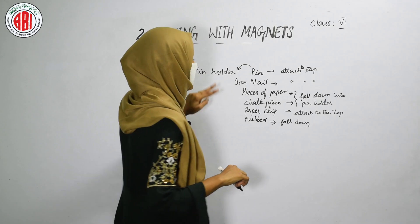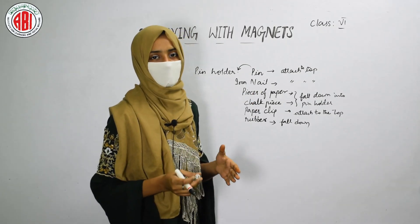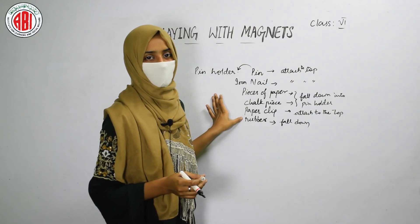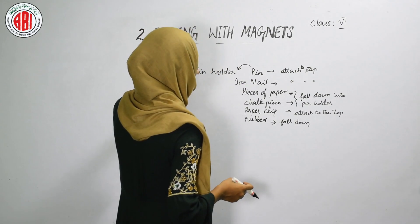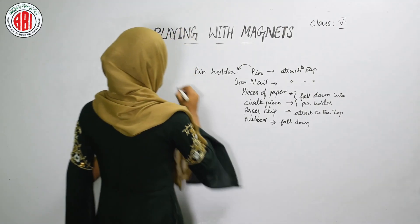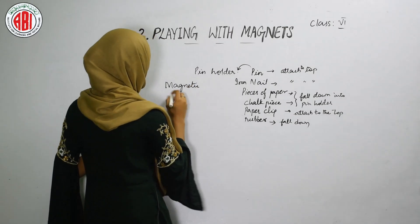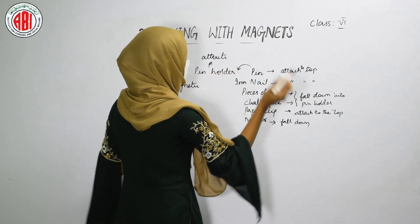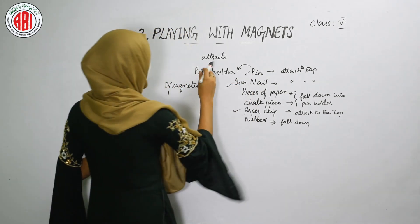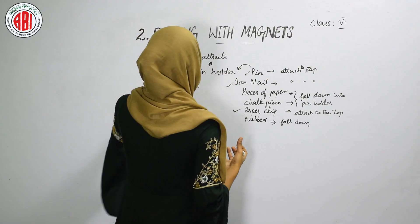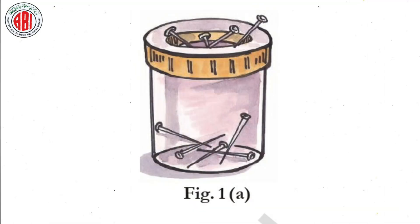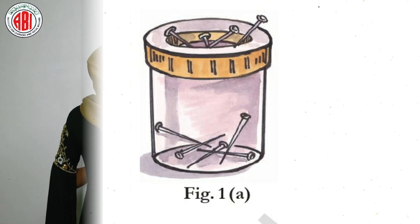There are two types of materials. By this activity, we can recognize which substances are showing the magnetic property and which are not. The substances that attach to the top of the pin holder are called magnetic substances, because the top of the pin holder attracts the pin, iron nail, and paper clip — it is showing some magnetic property. The substances which are not attracted by the magnet are called non-magnetic substances.